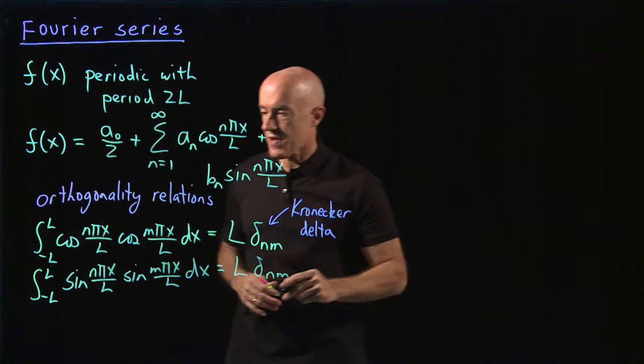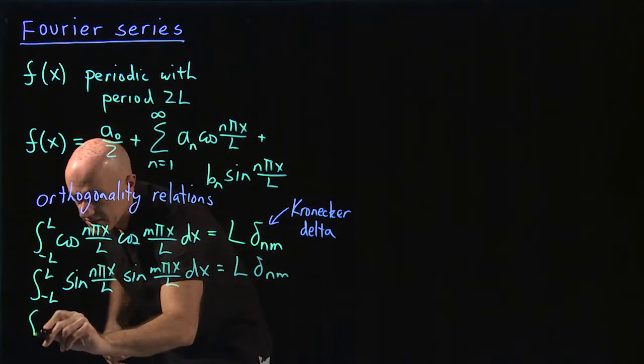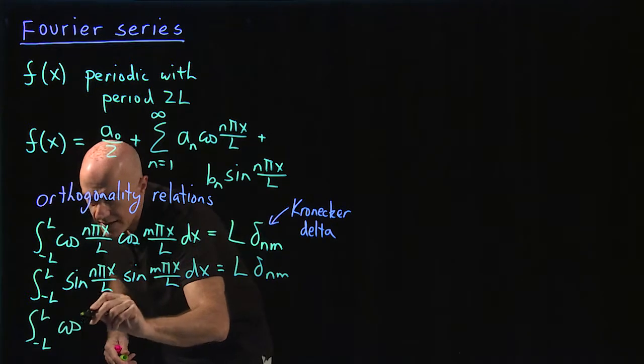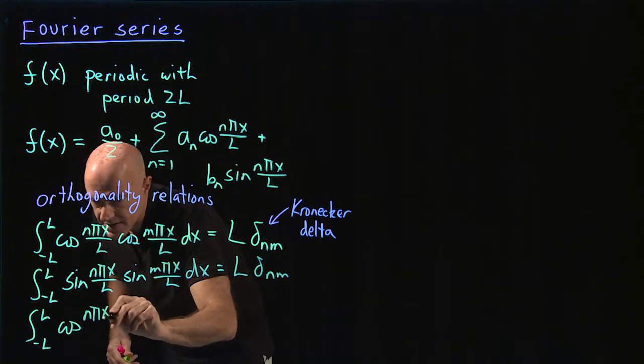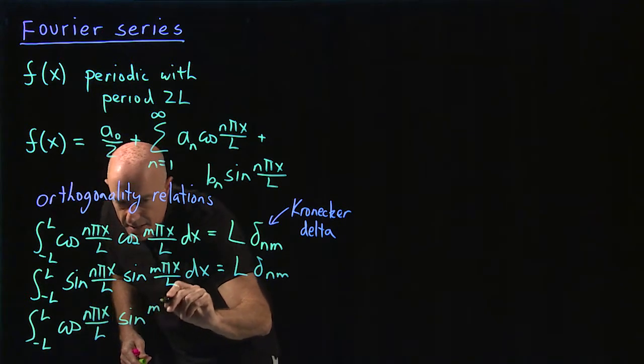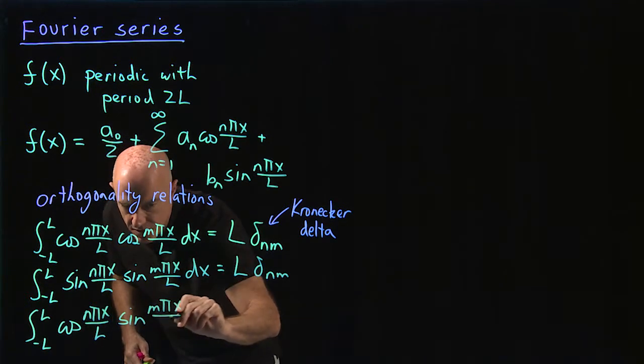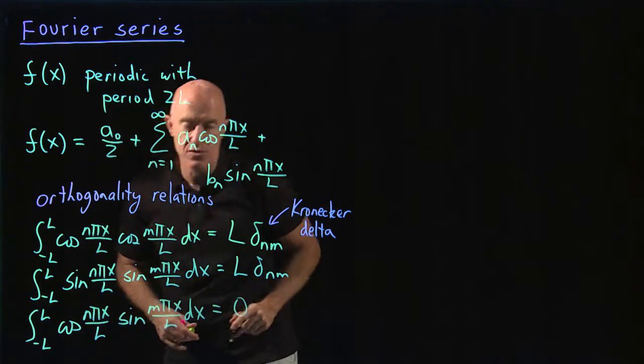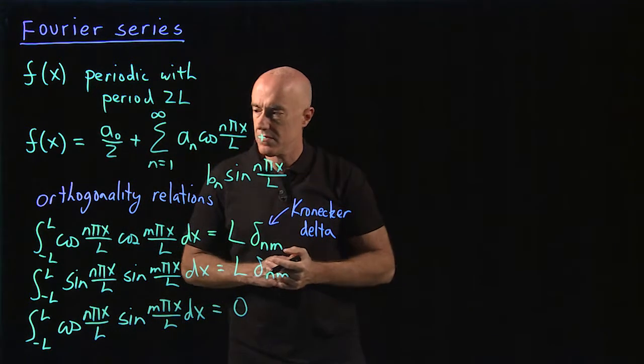And the last orthogonality relation is the integral from minus l to l of a cosine n pi x over l times a sine m pi x over l dx. And that's always equal to 0.